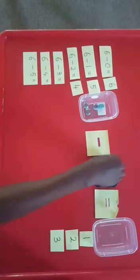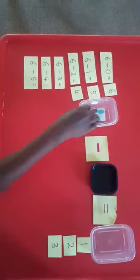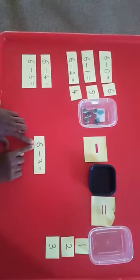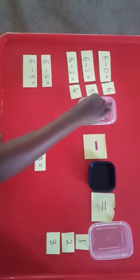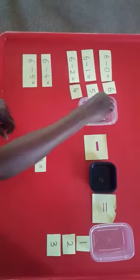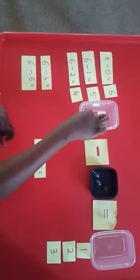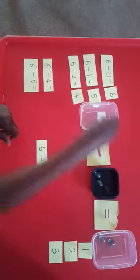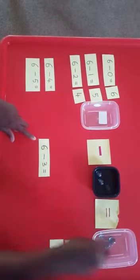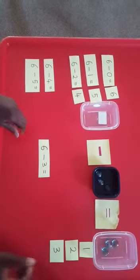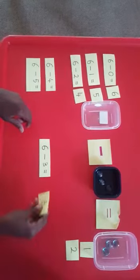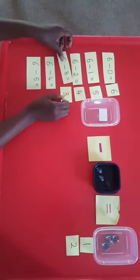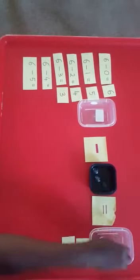Let's get the six stones back: one, two, three, four, five, six. The next equation says six take away three. I take away three — one, two, three. How many are remaining? One, two, three. So six take away three equals three. I take the answer card three and put it next to the equation.